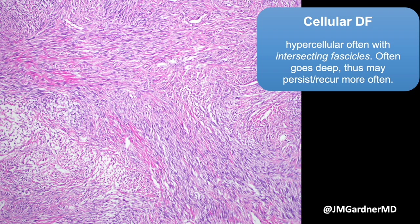Mentioning that cellular DFs can sometimes metastasize would likely freak out the patient and treating physician and result in excessive surgery with big margins that aren't needed. It's like telling every patient with a basal cell carcinoma that BCCs can sometimes metastasize — true, but very rare. The thing about cellular DFs is that they persist or recur more often. Earlier data suggested up to 50% recurrence; a more recent paper by Keith Duffy found it was closer to 10%.